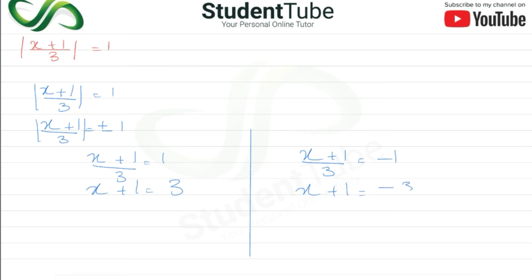Solving: x = 1 - 1/3 giving x = 2/3, and x = -1 - 1/3 giving x = -4/3.